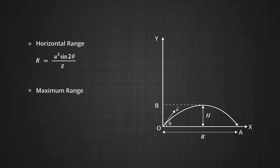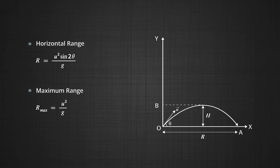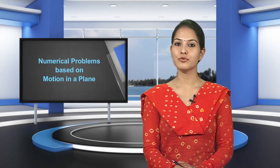For maximum range, if we take θ = 45°, then sin2θ becomes sin90° = 1. Therefore R = U²/g, which is the formula for maximum range. These are the formulas we use to solve the numericals.